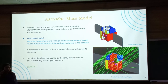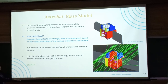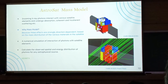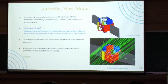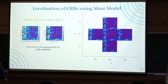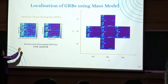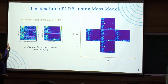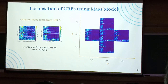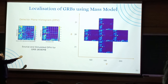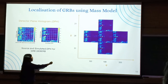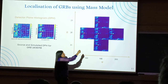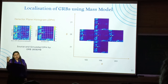We calculate the number of photon interactions with different satellite elements, and all of this is done in GEANT4. To localize the GRB: this is the surface of the detector, and this is a detector plane histogram — a 2D image of the detector showing the number of photons at each point. We compare the source detector plane histogram with the simulated ones from the mass model. As the source location changes, the shadow pattern changes, and that's how we determine where the GRB came from. We create a grid of points, do the calculations at each point, and calculate chi-square — the minimum chi-square gives the best-fit location of the GRB.